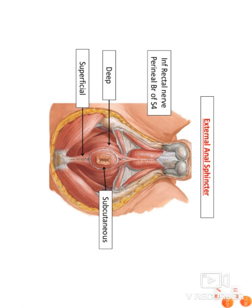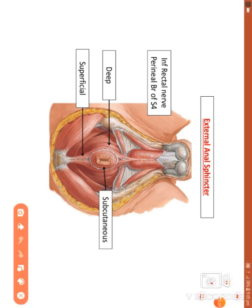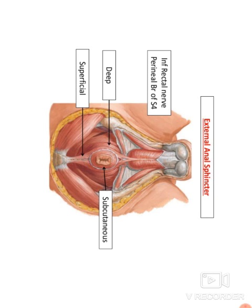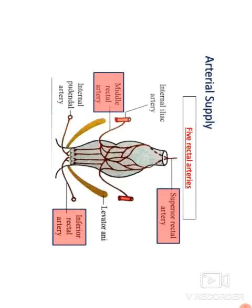This figure shows the inferior view of the perianal sphincter. You can see the anal orifice, and the external anal sphincter surrounds it, controlling the opening and closure of the orifice.